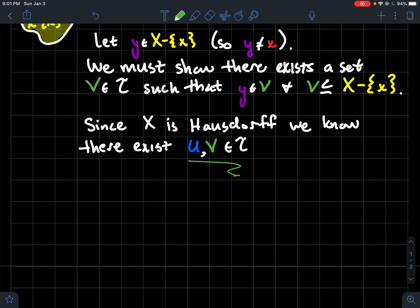Such that x is contained in U and y is contained in V, and moreover I know that U and V don't have any overlap, I know that U and V are disjoint.